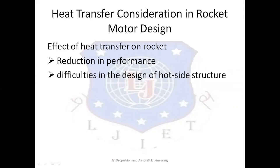Heat transfer to walls can affect a rocket in at least two different ways: the first is reduction in performance, and the second is creating greater difficulties in the design of the hot side structure. The principal modes of heat transfer to nozzle and combustor walls are by convection and radiation. Of these two, convection dominates, and radiation is also important for particle-laden flow from solid propellant rockets.